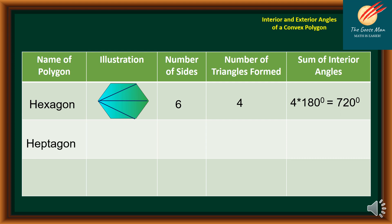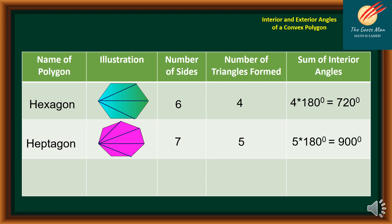Next, let's have heptagon — we have seven sides. I can draw four diagonals, so I have five triangles formed. The sum of the interior angles is five times 180 degrees, which is equal to 900 degrees.